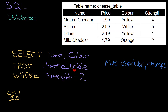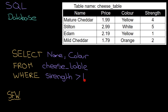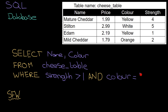We can do a little bit more than this — we can join two conditions together. For example: SELECT name and color WHERE strength is greater than one, and I can use my boolean words here — AND or OR — and color equals yellow. There's only one cheese with strength greater than one and color equaling yellow. Edam doesn't count because its strength is one, not greater than one. That is mature cheddar, so the result would be mature cheddar and yellow.